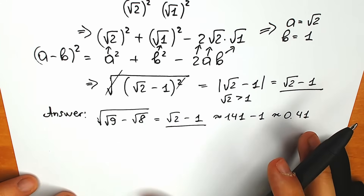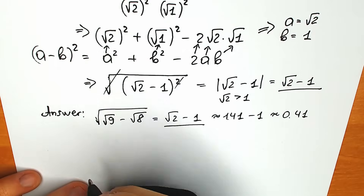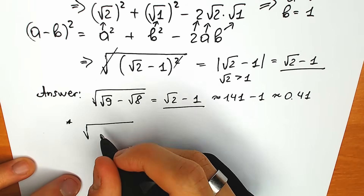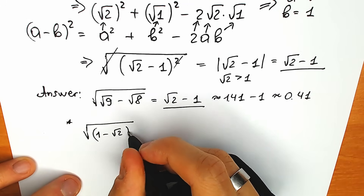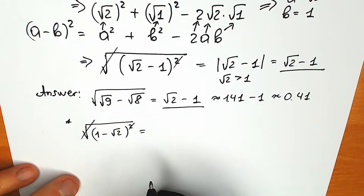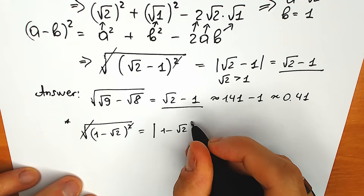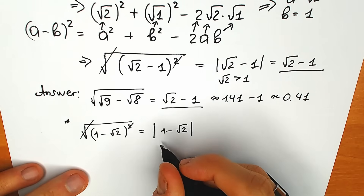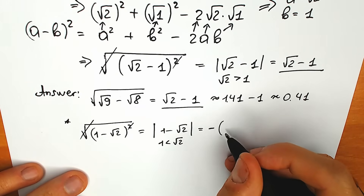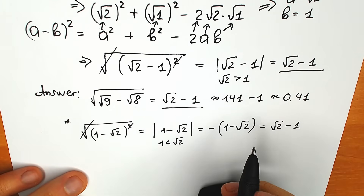A few tips about absolute value — a lot of students ask why we need it. Without it and with it we might get the same answer in this case, but consider: if instead we had square root of 1 minus square root of 2, the whole thing squared, we would cancel and write the absolute value of 1 minus square root of 2. Since square root of 2 is greater than 1, that expression is negative. So we put a minus sign, giving minus(1 minus square root of 2), which changes all signs to give square root of 2 minus 1.